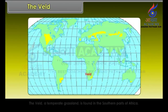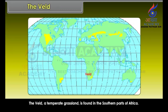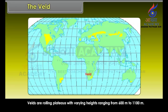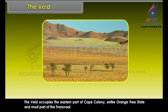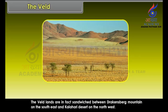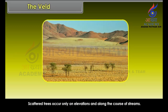The Veld, a temperate grassland, is found in the southern parts of Africa. Velds are rolling plateaus with varying heights ranging from 600 meters to 1,100 meters. The Veld occupies the eastern part of Cape Colony, the entire Orange Free State, and most part of the Transvaal. The Veld lands are sandwiched between the Drakensberg Mountains on the southeast and the Kalahari Desert on the northwest. Scattered trees occur only on elevations and along the course of streams.